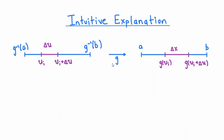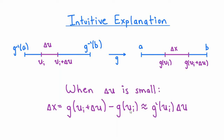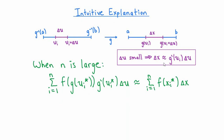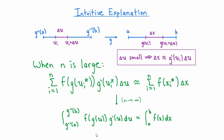Let's think about what happens when we apply the function g to each one of the subintervals from g inverse of a to g inverse of b. The quantity delta x is g of ui plus delta u minus g of ui. When delta u is small, this is approximately equal to g prime at ui times delta u — this follows directly from the definition of the derivative. Coming back to our Riemann sums, this tells us that when n is large, the Riemann sum on the left is approximately equal to the Riemann sum on the right. When we take the limit as n tends to infinity, we get exactly the formula we were aiming for, giving an intuitive but somewhat rigorous explanation of where the change of variables formula for single integrals comes from.